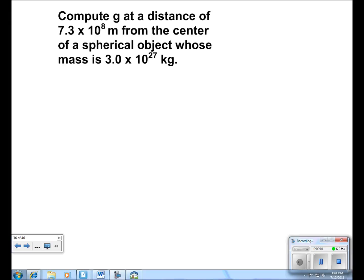Now when we're looking to find g at a distance of 7.3 times 10 to the 8th meters, which is the r, from the center of a spherical object whose mass is 3.0 times 10 to the 27 kilograms, which is the mass.